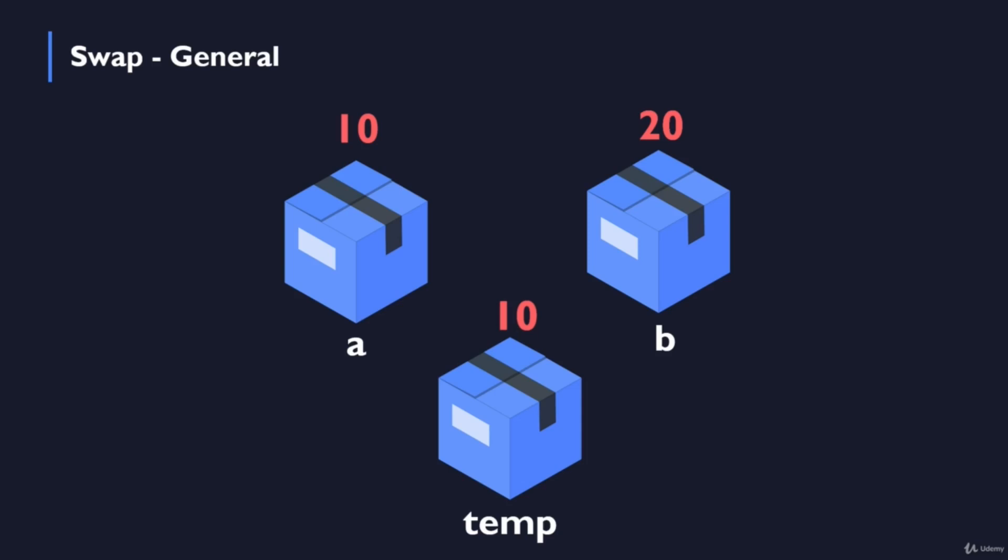And finally we will take all the shoes, all the value itself of 10 from box temp, and put this value inside of box b. And now the exchanging process between these two boxes a and b we can say that it's complete.